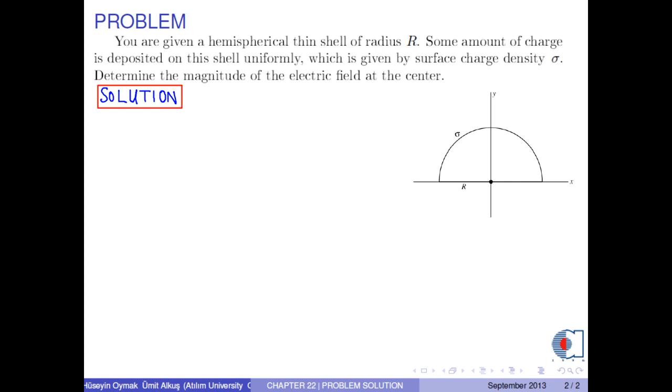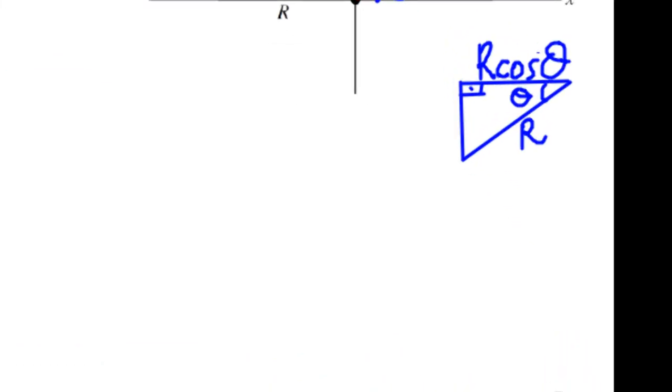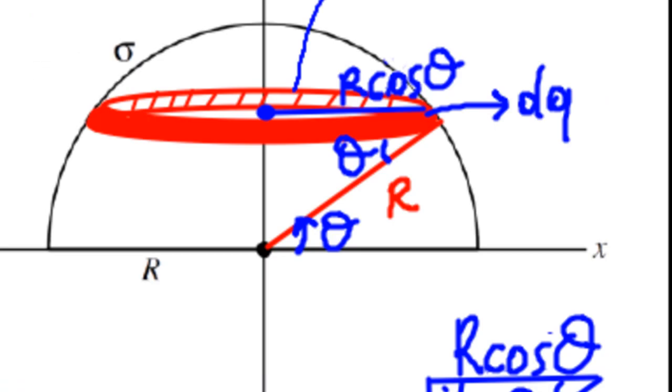Let's take an infinitesimal thin shell at an angle theta, which is measured from positive x-axis. Then its radius becomes R times cosine theta because of the particular interim, and let the charge of this infinitesimal thin shell be dq.